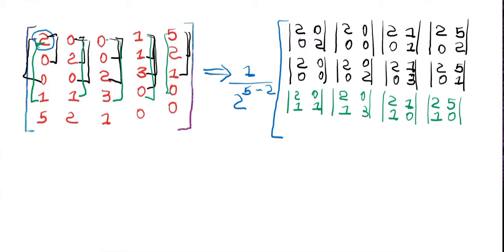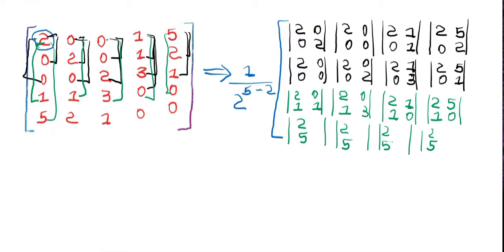Now we will take the elements of the first row and the fifth row, which is 2, 5. Again, same way, we will create 4 determinants having the first column as 2, 5. Then for the second column: 0, 2 for the first; 0, 1 for the next; then 1, 0 for the third one; and for the last one, 5, 0.